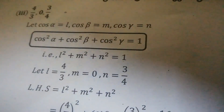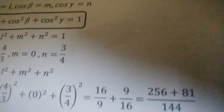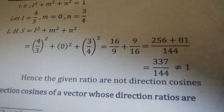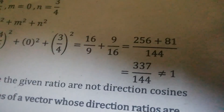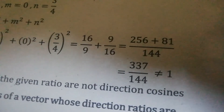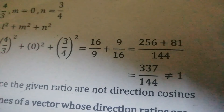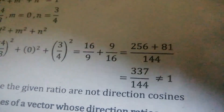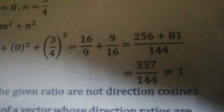The next given numbers are 4/5, 0, 3/5. Applying the same condition, the final answer is 337 by 144, which is not equal to 1. So it is not a direction cosine.